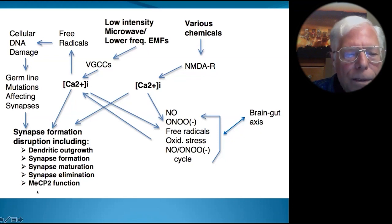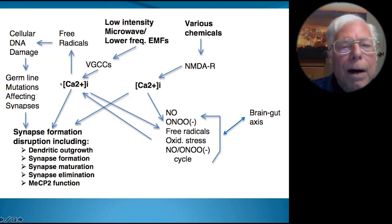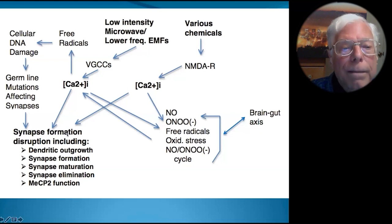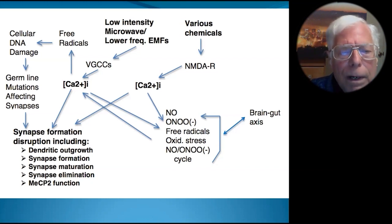All of these mechanisms are known to be regulated by intracellular calcium. Therefore, when you have excessive intracellular calcium — produced either through EMFs or through various chemicals — you will disrupt this synapse formation. In autism, it's known that the connectivity of different parts of the brain is impacted.